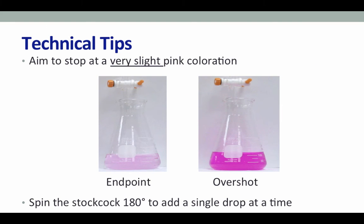Placing white paper underneath your Erlenmeyer flask can really help in judging when you've reached the endpoint, especially with the dark countertops in our Chem 1A labs. For the best titration, aim for a very slight pink coloration. If your solution looks darker pink, you have overshot the endpoint. To achieve the light pink coloration, add only a fraction of a drop from your burette at a time by spinning the stopcock a complete 180 degrees — this fluid motion results in less time with the stopcock open than turning 90 degrees and back.